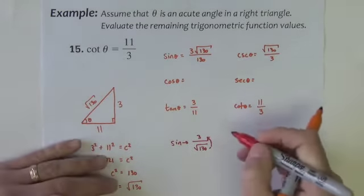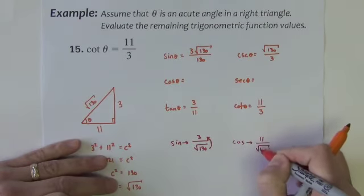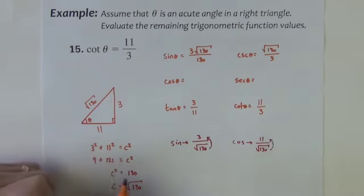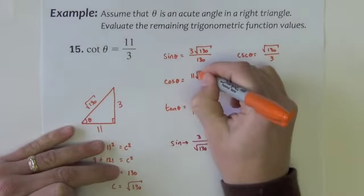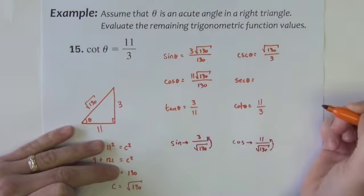The cosine is the adjacent over the hypotenuse. Again take that hypotenuse radical and rationalize it up to the numerator. Cosine is 11 square root of 130 over 130.